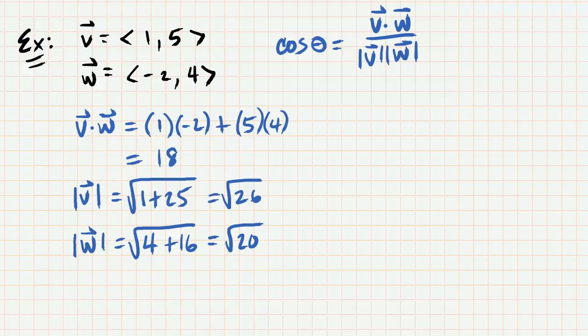Let's plug these into our formula. So cosine of theta will then be 18 divided by the square root of 26 multiplied by the square root of 20.